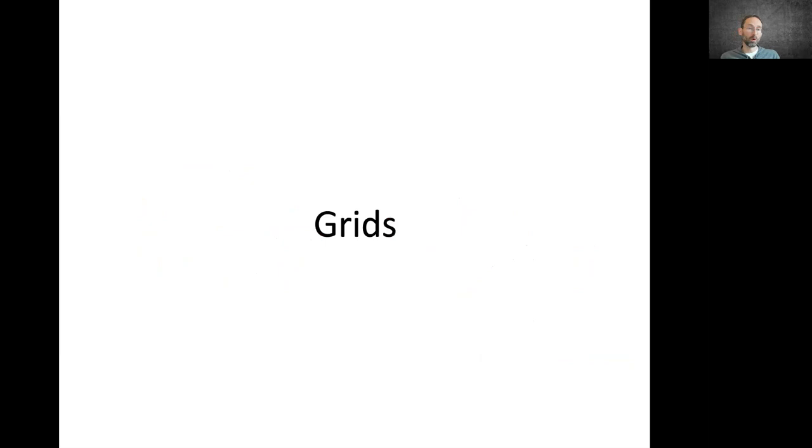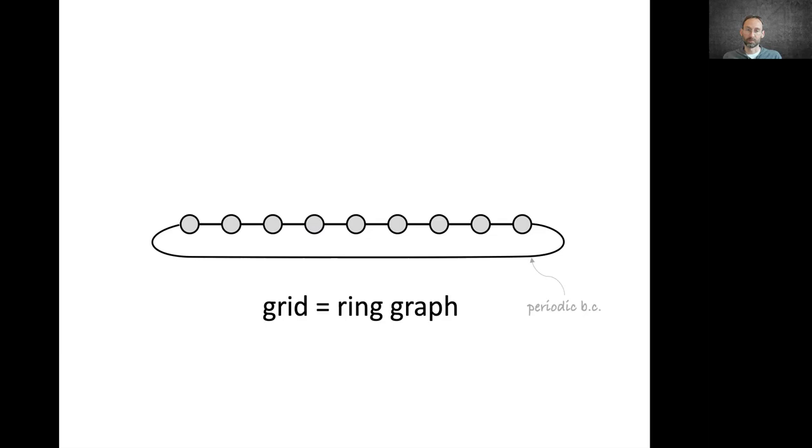Let me now move to another type of geometric structure that we are probably very familiar with, and these are grids. I hope to show you a slightly different perspective. Grids are also a particular case of graphs. For example, a grid with periodic boundary conditions is called a ring graph. Compared to general graphs, the first thing that you notice on a grid is that it has a fixed neighborhood structure.